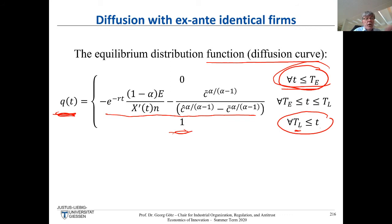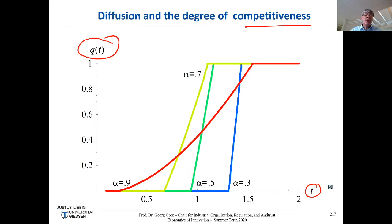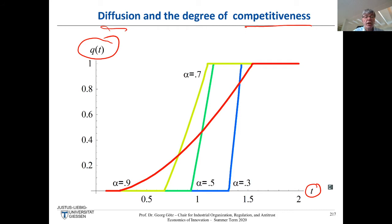We have a closed-form solution and can directly derive empirical hypotheses about adoption patterns from this function. We can also investigate Schumpeterian topics: how does the intensity of competition affect the diffusion curves? The parameter α is very important — α = 1/2 gives an elasticity of demand (equal to the elasticity of substitution) of 2.